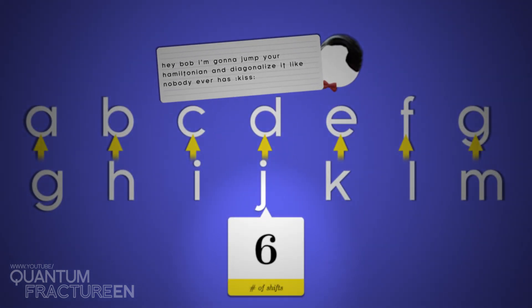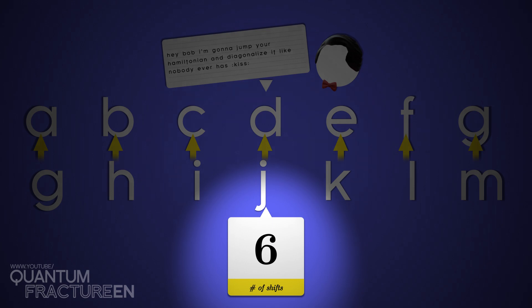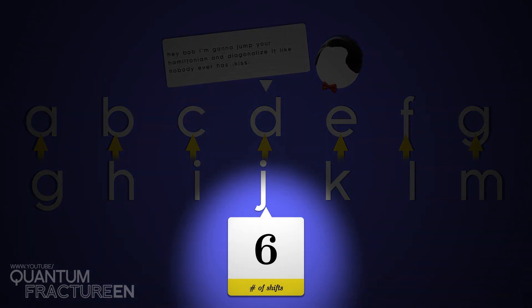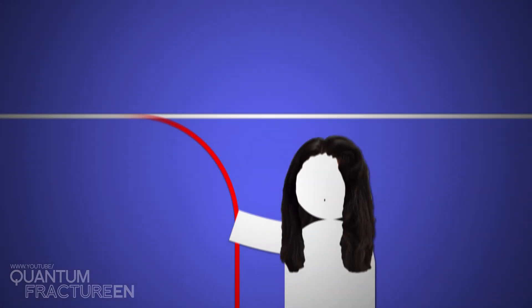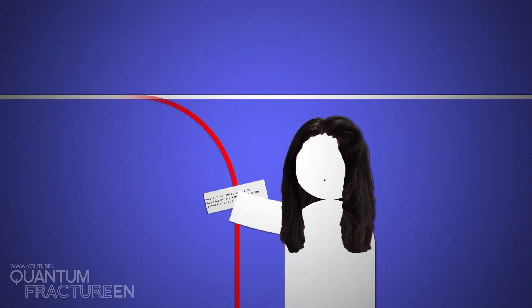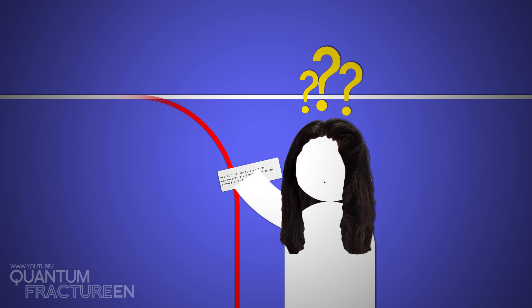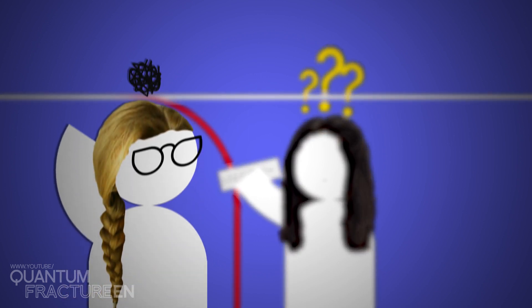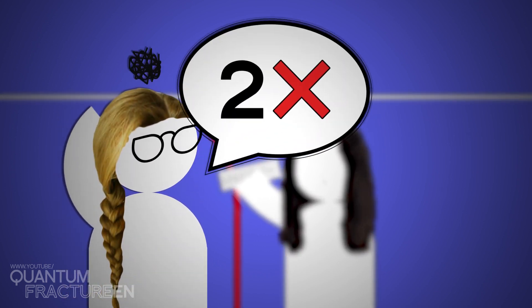And of course, Bob has to know how many times Alice shifted the alphabet in order to decipher it. Bob needs to know the key. The key is essential. Even if Eve intercepts the message and knows what kind of code they're using, without the key, she can't read it. This all sounds great to Bob, but Alice sees two major problems.